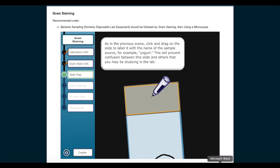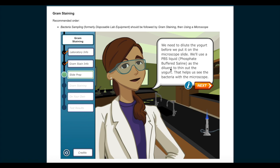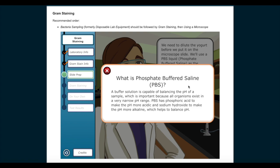As in the previous scene, click and drag on the slide to label it with the name of the sample source, for example, yogurt. This will prevent confusion between this slide and others that you may be studying in the lab. We need to dilute the yogurt before we put it on the microscope slide. We'll use a PBS liquid, phosphate-buffered saline, as the diluent to thin out the yogurt. That helps us see the bacteria with the microscope. What is phosphate-buffered saline, PBS? A buffer solution is capable of balancing the pH of a sample, which is important because all organisms exist in a very narrow pH range. PBS has phosphoric acid to make the pH more acidic and sodium hydroxide to make the pH more alkaline, which helps to balance pH.